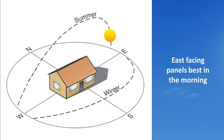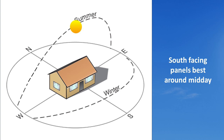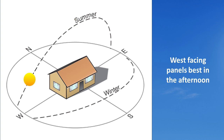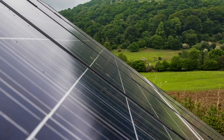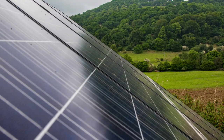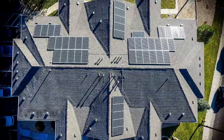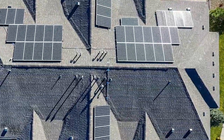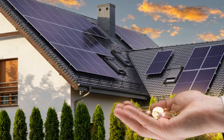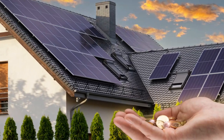East facing panels work best in the morning, and then as the sun moves across the sky, south facing panels start to generate energy with the peak around midday. As the sun moves further round in the afternoon and early evening, west facing panels start to work best. Although north facing panels are by their nature much less effective, a large array of such panels can still generate worthwhile amounts of energy. And of course, in many situations, solar panels can be installed on more than one section of roof such that they face in a variety of directions, with electricity being generated throughout the day.